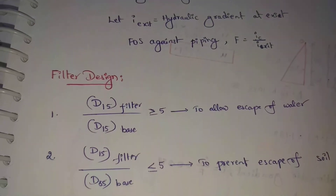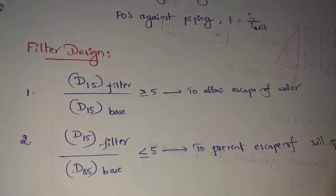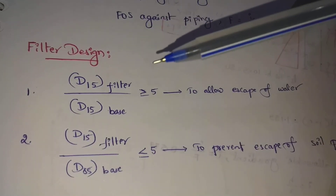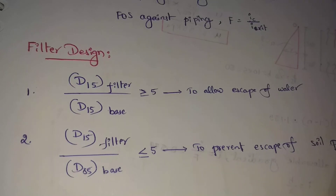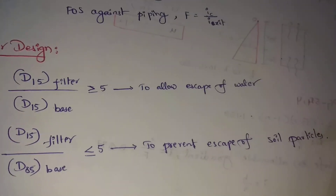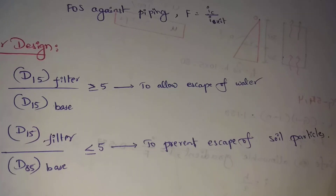For filter design at the downstream side: D15(filter) divided by D15(base) greater than or equal to 5, to allow escape of water — so that filter can let water escape. Next, D15(filter) divided by D85(base) less than or equal to 5, to prevent escape of soil particles — so in this filter, soil particles are prevented from escaping.